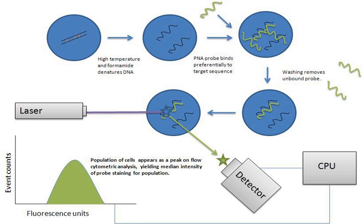The flow cell has a liquid stream which carries and aligns the cells so that they pass single file through the light beam for sensing. The measuring system commonly uses measurement of impedance or conductivity and optical systems including lamps (mercury, xenon), high-power water cooled lasers (krypton, dye laser), and low-power air-cooled lasers (red HeNe, green HeNe, HeCd, diode lasers in blue, green, red, violet), resulting in light signals.